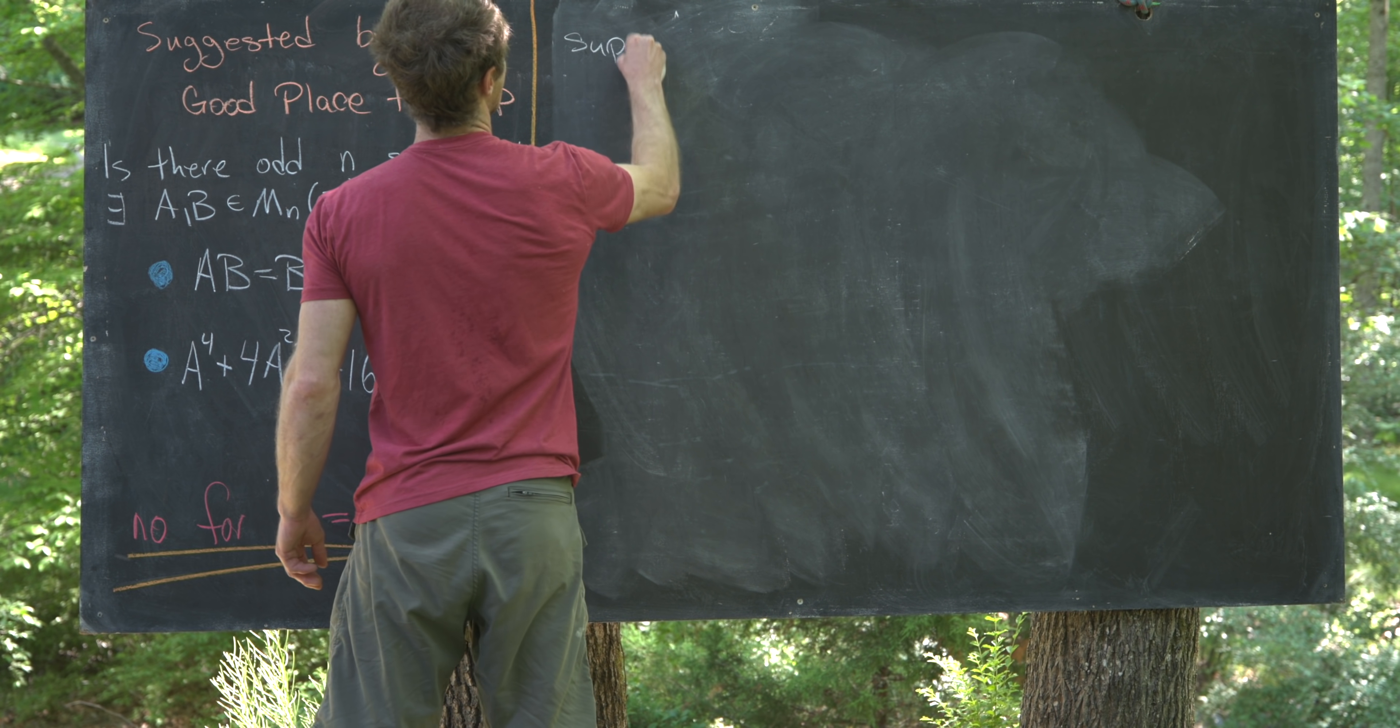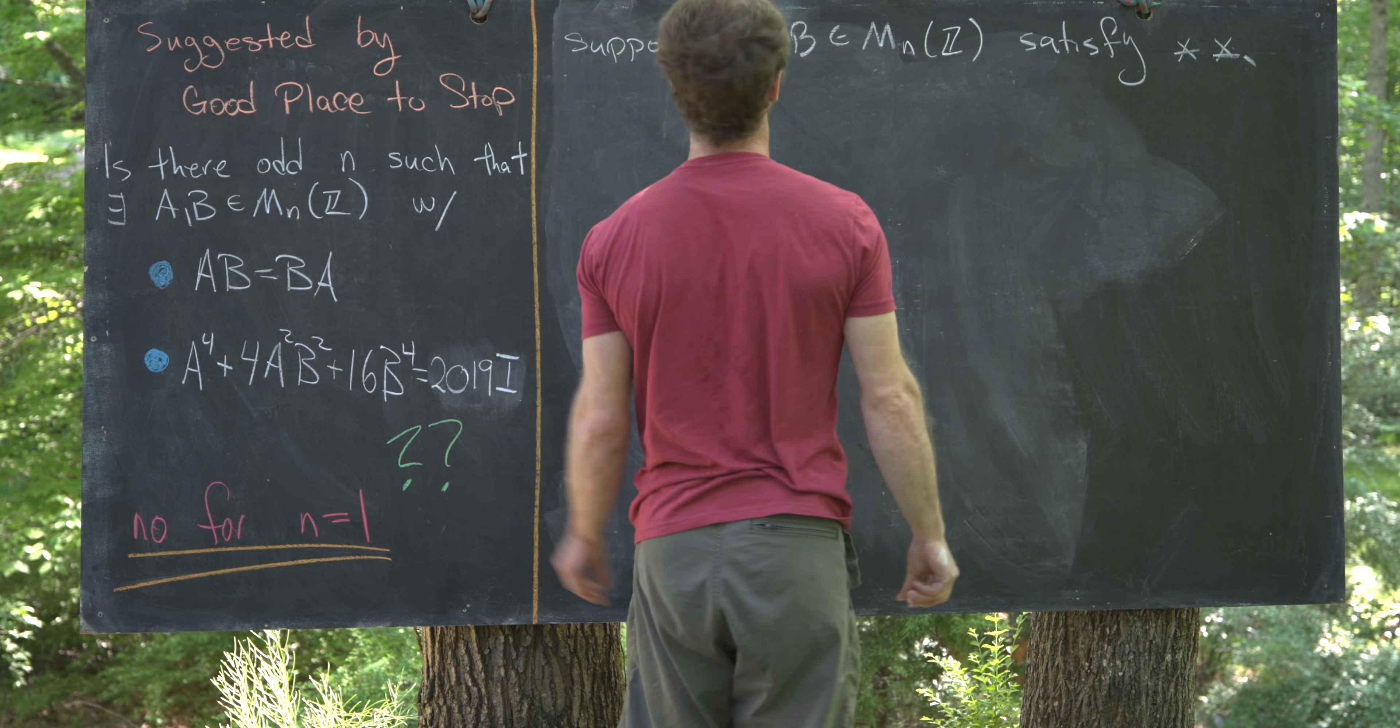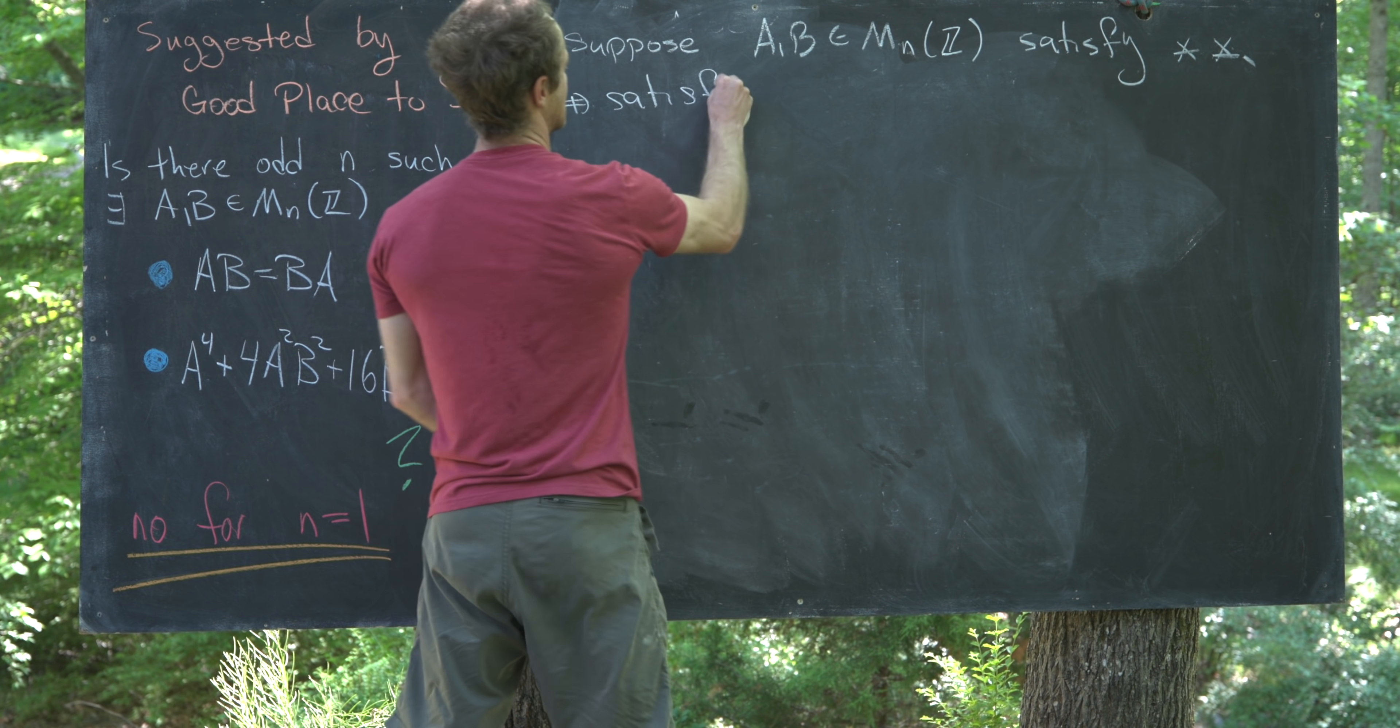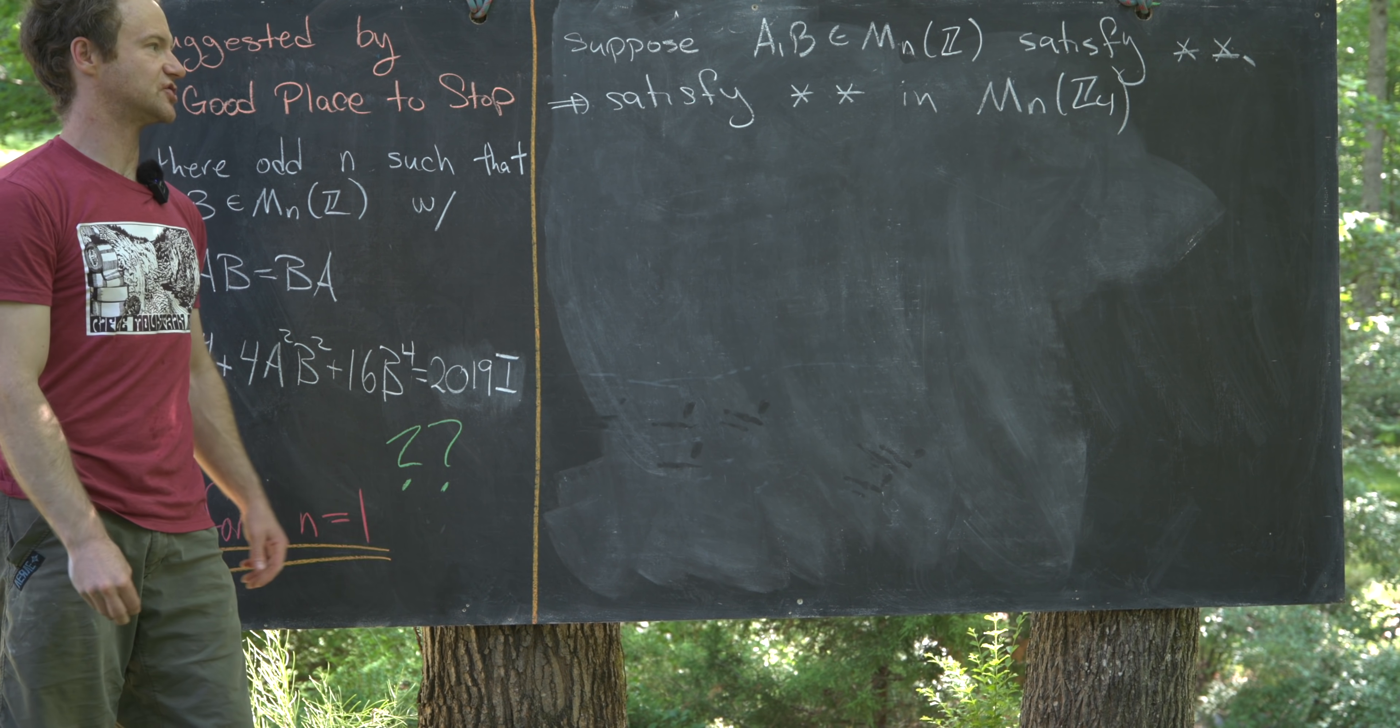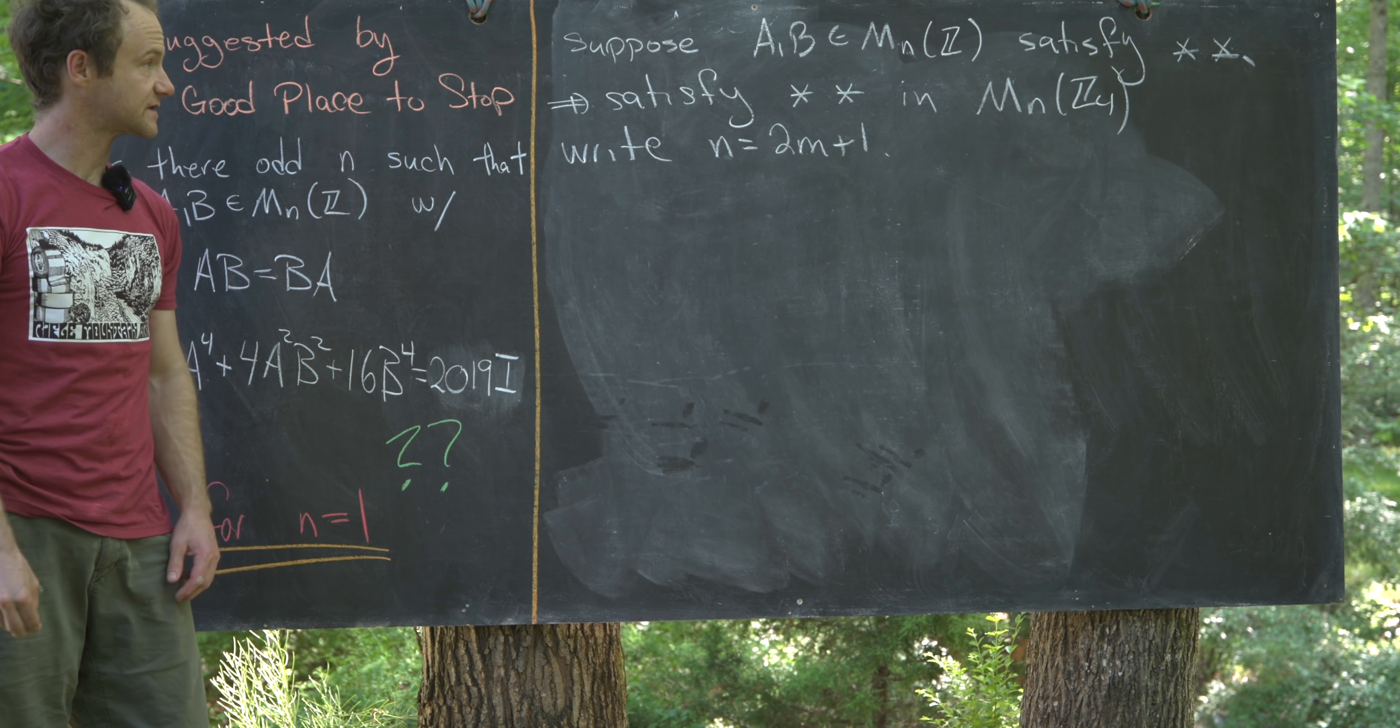Okay, so let's suppose that the two matrices A and B in M_n(Z) satisfy... I'll just put two stars over here to mean these two blue dots. But, if they satisfy those two stars in the integers, then that means they also satisfy these two conditions in M_n(Z4). In other words, the ring of n by n matrices with integers in Z4. And then, furthermore, let's maybe go ahead and write n as 2m plus 1. We know that we can do that because n is odd. That's one of our assumptions.